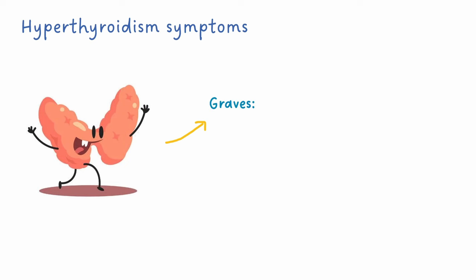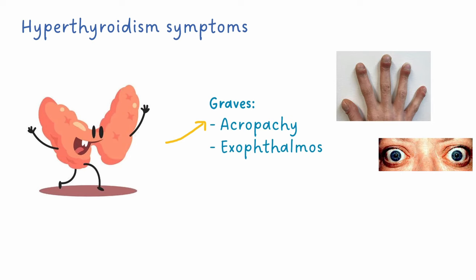Some more specific symptoms for Graves' hyperthyroidism are acropachy, exophthalmos, and pretibial myxedema.